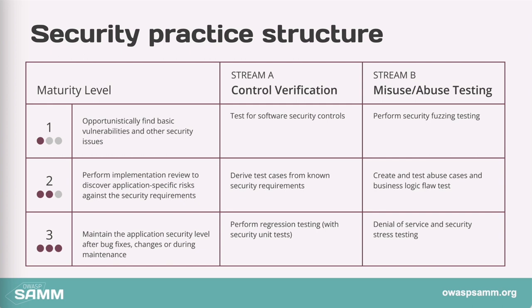In Stream B — which is what people typically think of as security testing — you use fuzzing tools, someone who thinks like an attacker defining abuse cases, business logic flaws, and stress tests. At level one, it's relatively ad hoc, requiring your organization to opportunistically find basic vulnerabilities and security issues. Level two requires more systematicity — you create test cases that abuse the business logic. Level three is mastery: for Stream A that means a full regression test suite of tests related to the security functionality of the system; for Stream B, that would be denial of service and security stress testing.